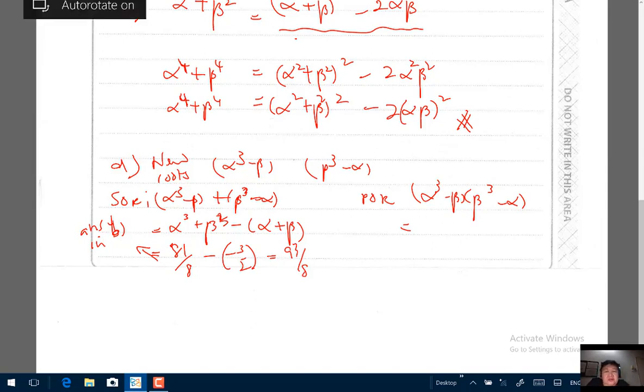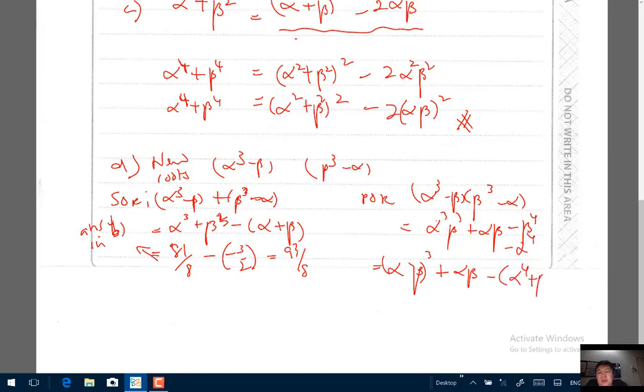The product of roots, you have to be really careful. You're going to expand this expression here. You will get α³β³ + αβ - β⁴ - α⁴, which is the same as (αβ)³ + αβ - (α⁴ + β⁴). Then you substitute in really carefully, so (αβ)³ plus αβ, which is 3, minus the α⁴ + β⁴.